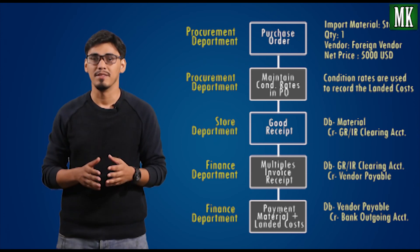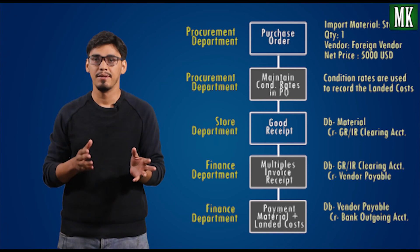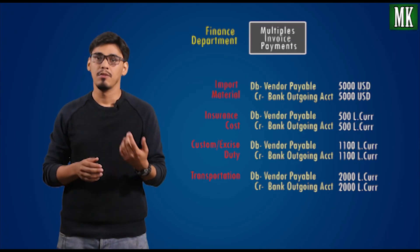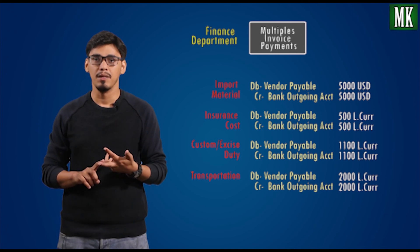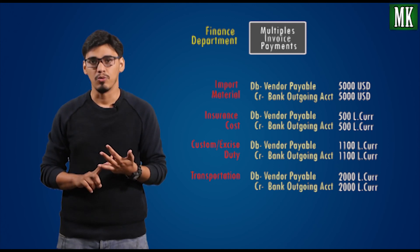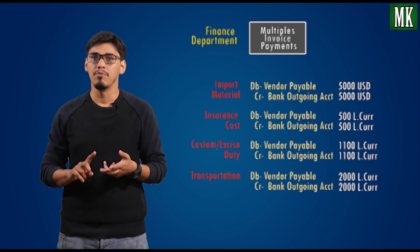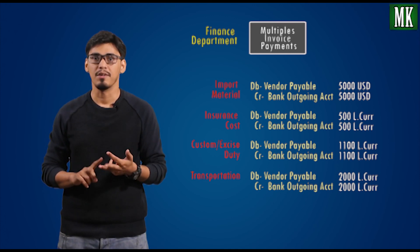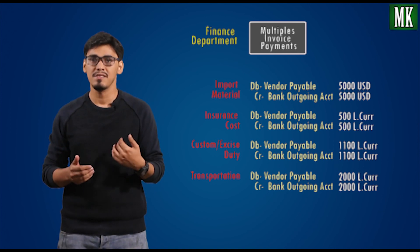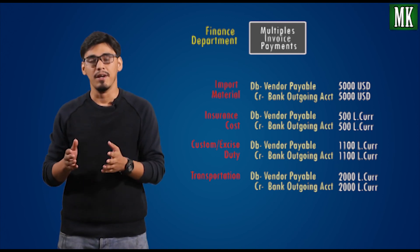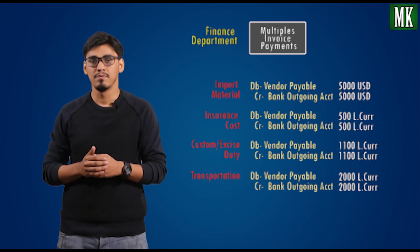The last step is the payment of invoices to the relevant vendors. The accounting entries generated are as follows: for the import vendor — debit vendor payable, credit bank outgoing account. Similarly, for the custom vendor, insurance vendor, and transportation vendor, the accounting entry is the same: debit vendor payable and credit bank outgoing account or cash account.